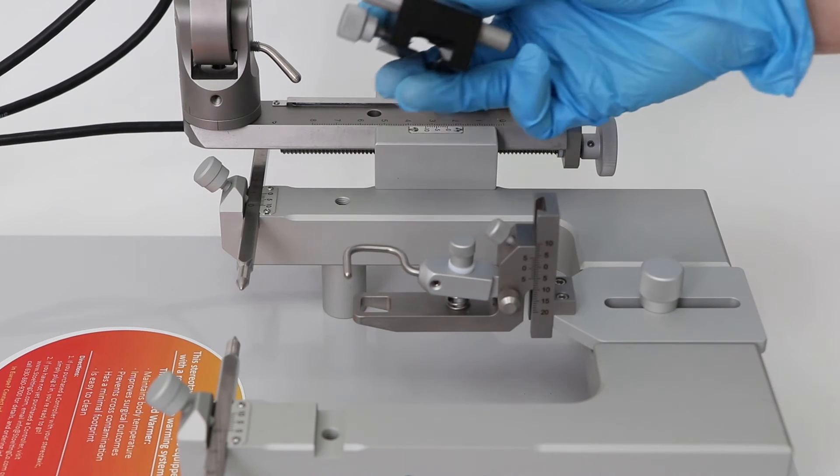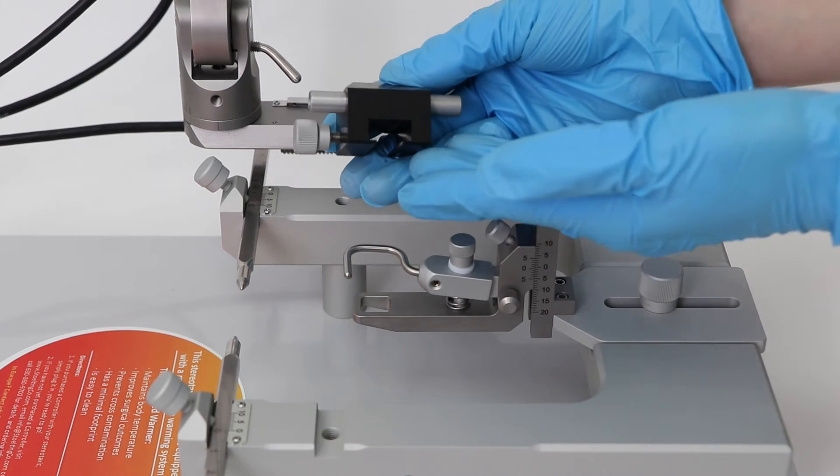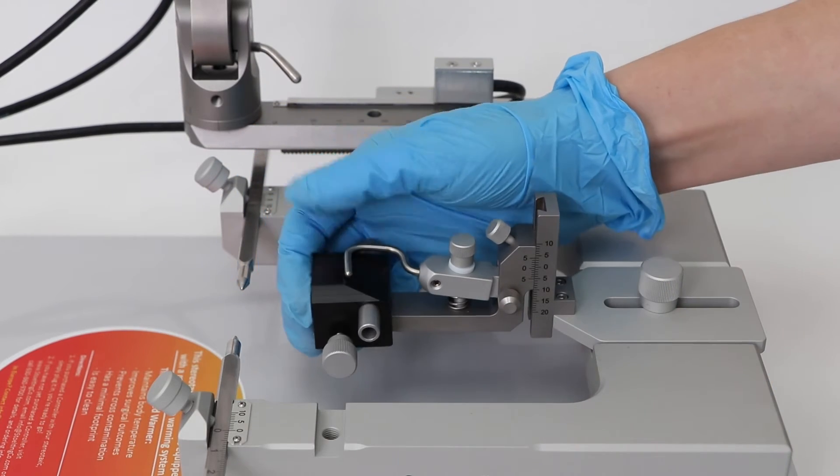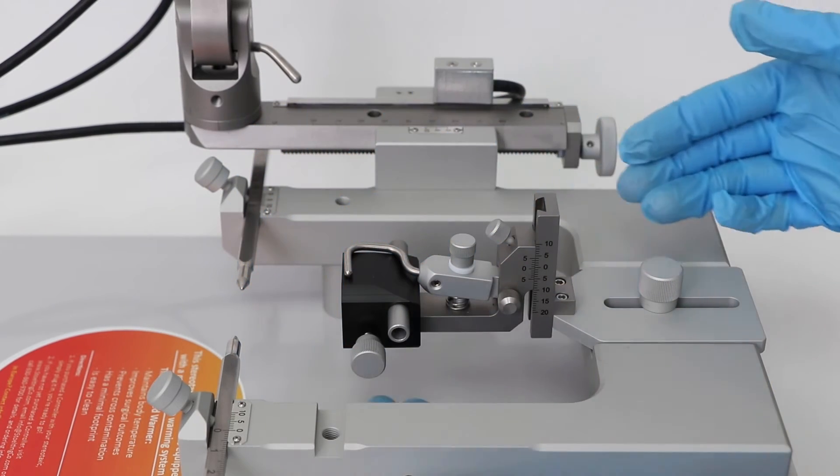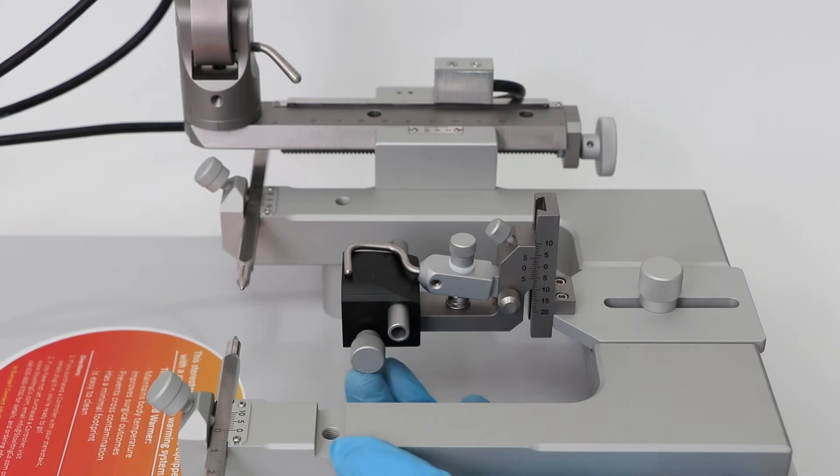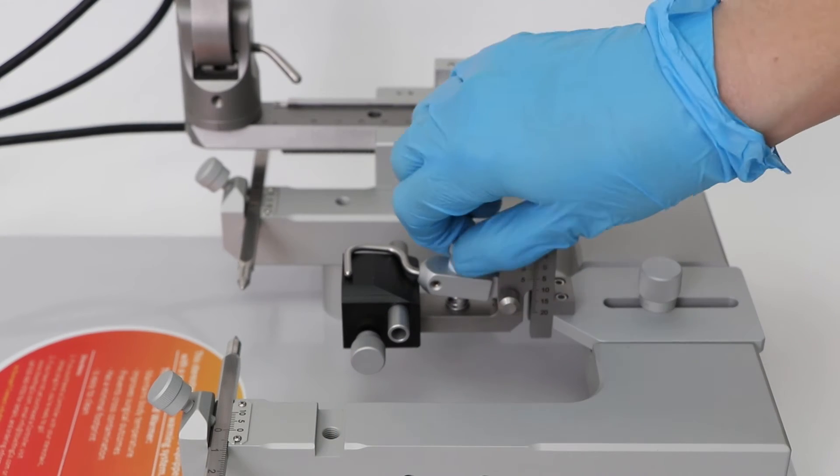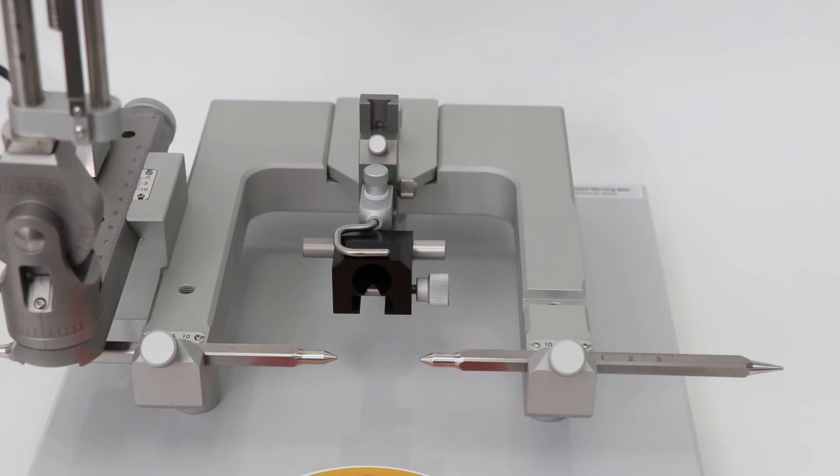Attach the rat anesthesia mask onto the nose cone clamp. Make sure it is fitted securely using the fastening screw. Connect your anesthesia system of choice to the connection port seated at the back of the mask block.